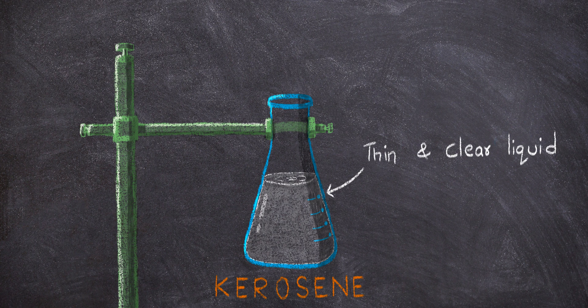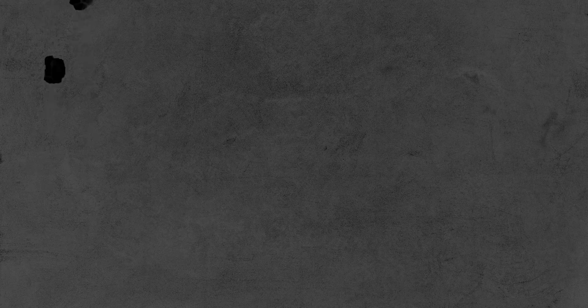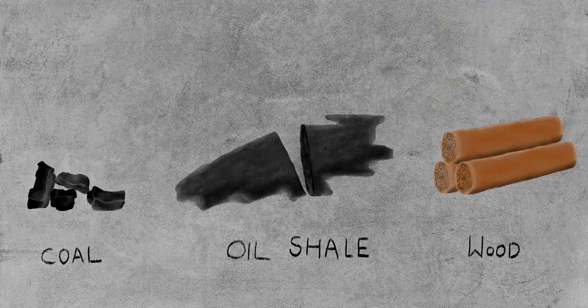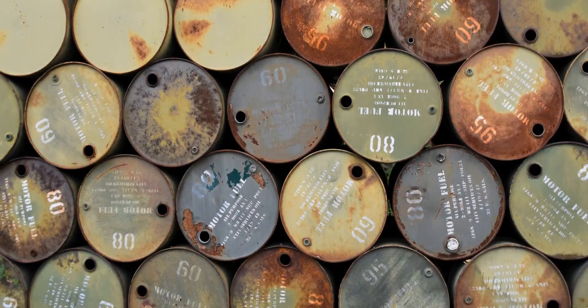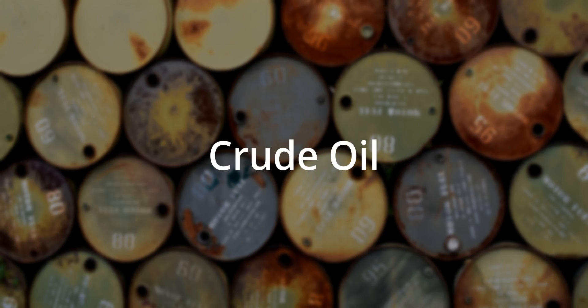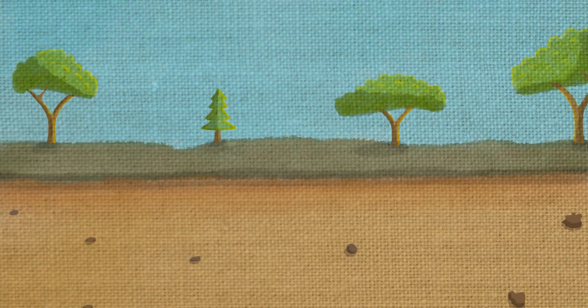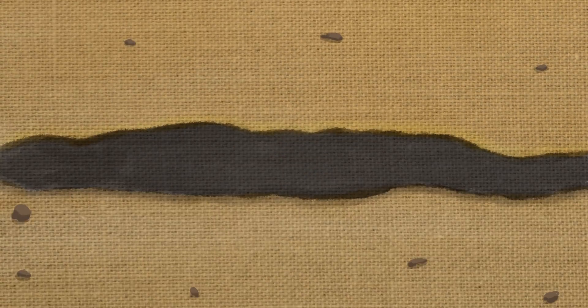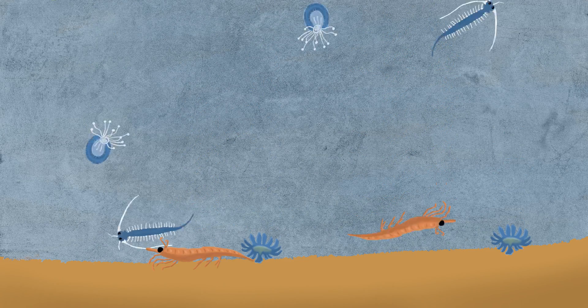Kerosene is a thin clear liquid consisting of a mixture of hydrocarbons that boil between 150 and 275 degrees centigrade. While kerosene can be extracted from coal, oil shale, and wood, it is primarily derived from refined petroleum. Kerosene is extracted from a mixture of petroleum chemicals, also known as crude oil, found deep within the earth.